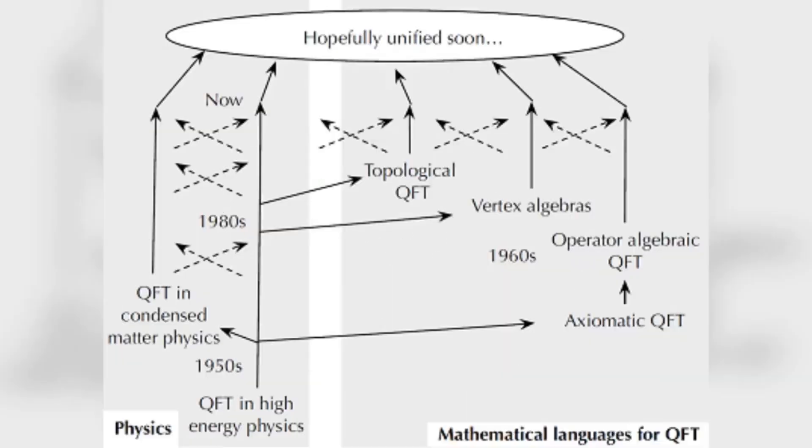Witten's contributions extend beyond theoretical physics, encompassing diverse areas such as quantum field theory, topological quantum field theory, and mathematical physics. His profound insights have reshaped our understanding of fundamental concepts in physics and inspired new avenues of research.